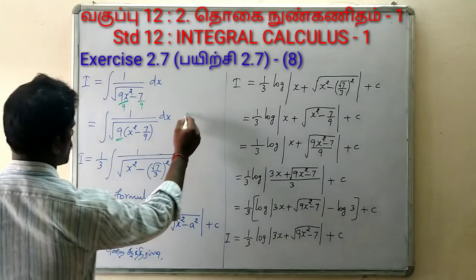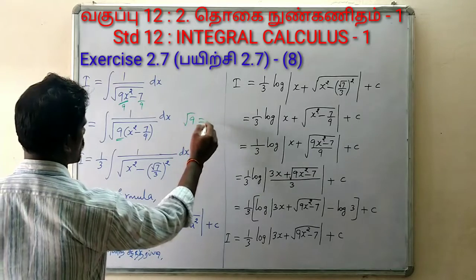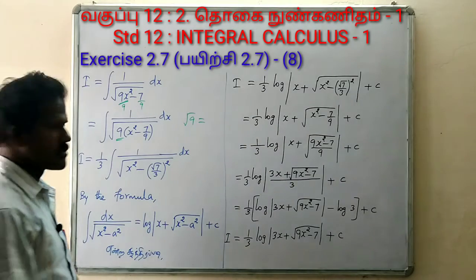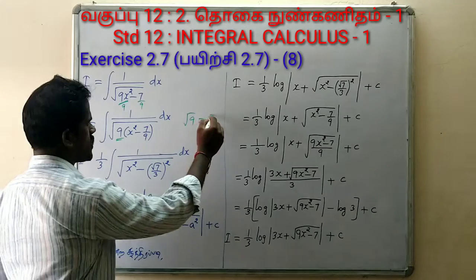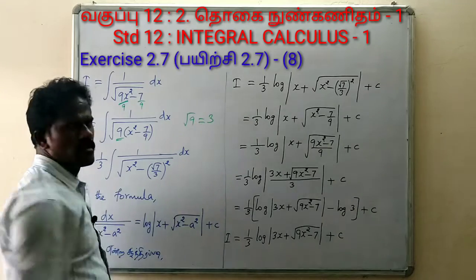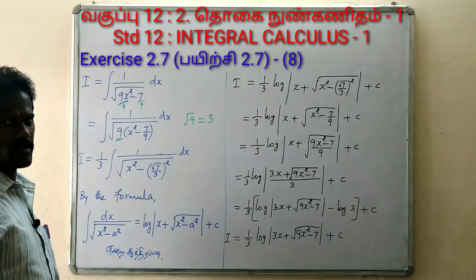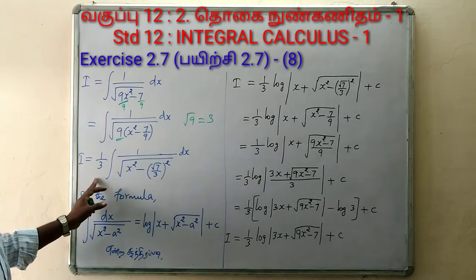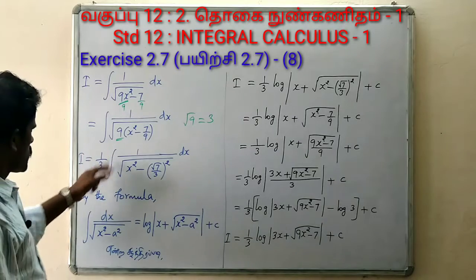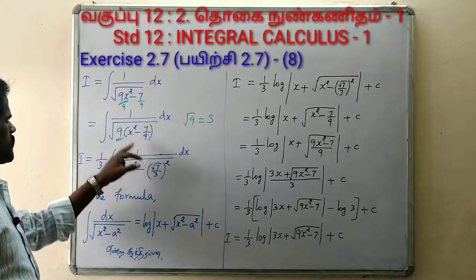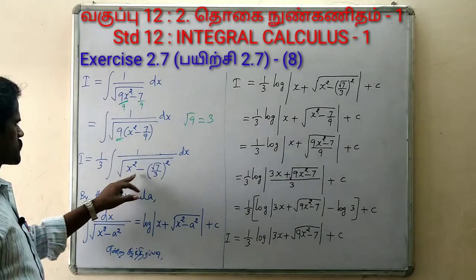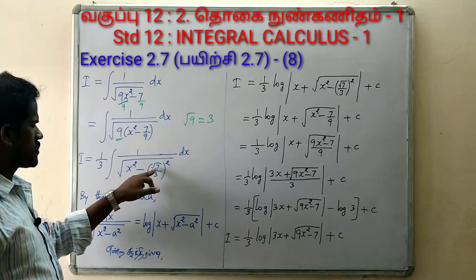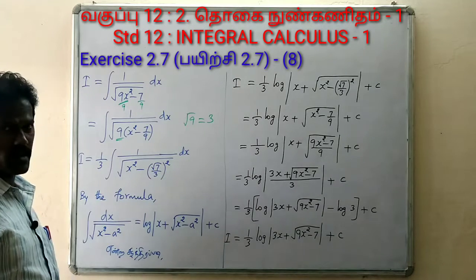The square root of 9 is equal to 3. So the square root of 9 equals 3. If we bring 1 divided by 3 outside, then 1 by 3 is equal to the integral of 1 by root of x² minus, and this becomes root of √7 by 3, whole square, dx.